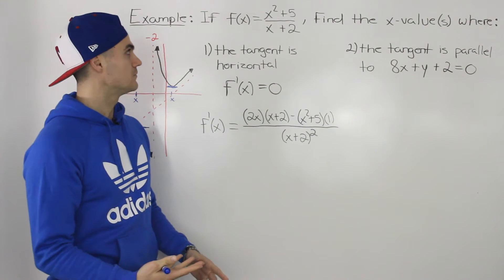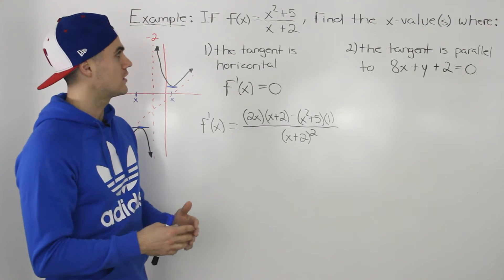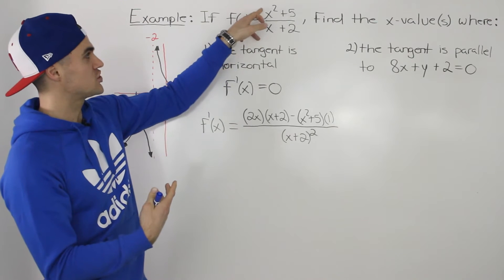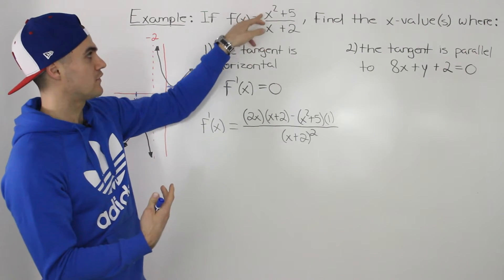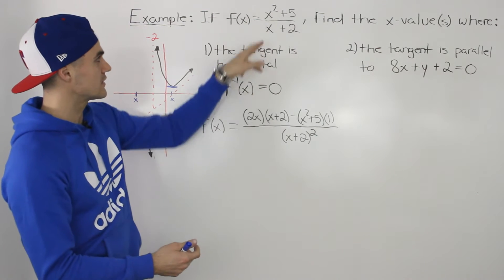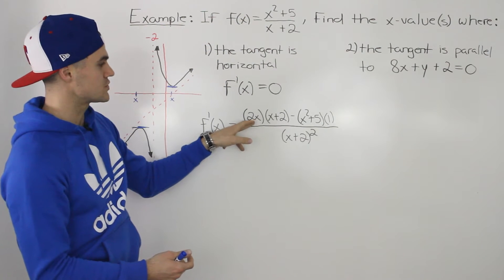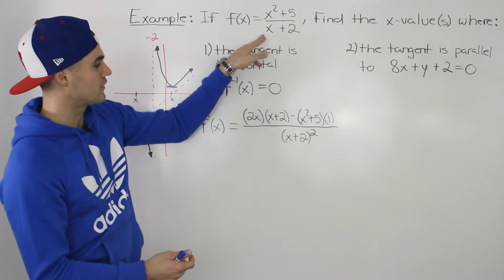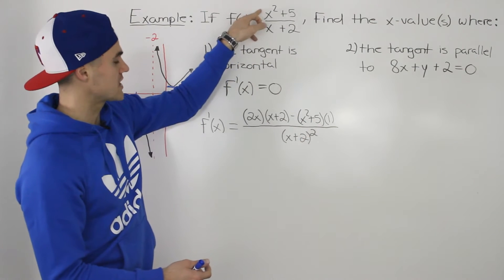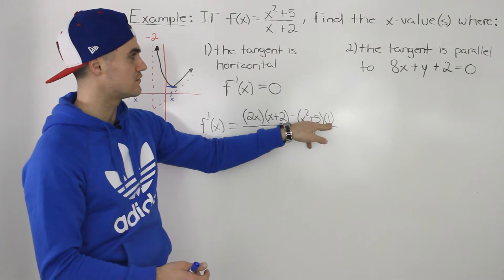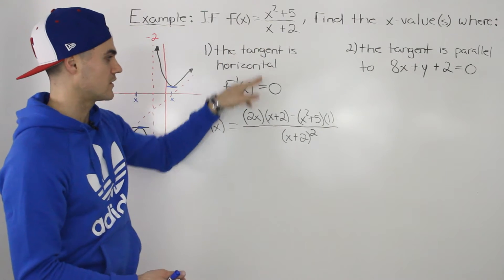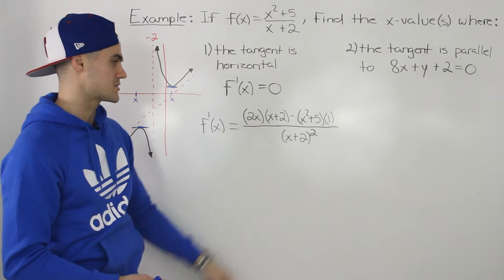To find the derivative, we use the quotient rule because this function is in the form g of x over h of x — one function over another. Applying the quotient rule, we take the derivative of the top function, which is 2x, times the bottom function x plus 2, minus the top function x squared plus 5, times the derivative of the bottom function, which is 1. All over the bottom function squared — so x plus 2 squared.